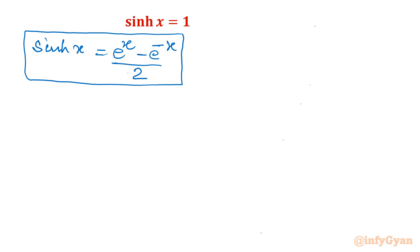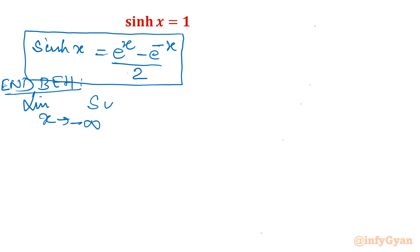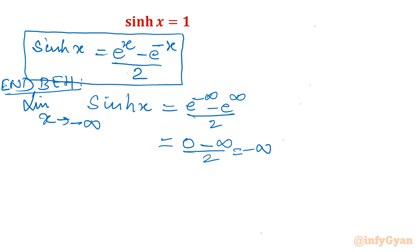Using exponential graphs we already know, we can conclude our sinh graph. Let me begin with the end behavior. For x tending to minus infinity, sinh(x) = (e^(-∞) - e^(+∞)) / 2. The first value will be 0 and the second is infinity, so overall we get minus infinity. So as x tends to minus infinity, the graph goes to minus infinity.